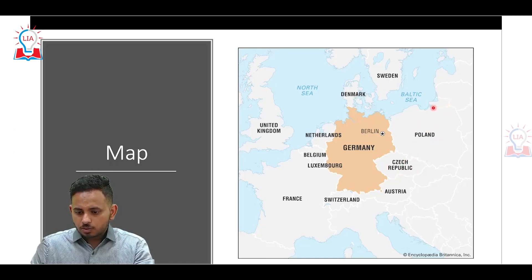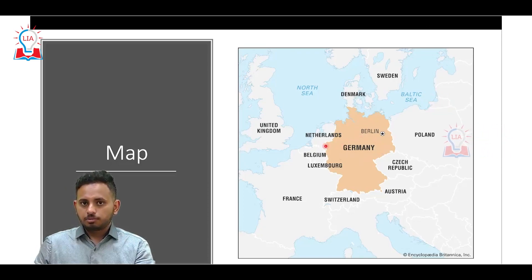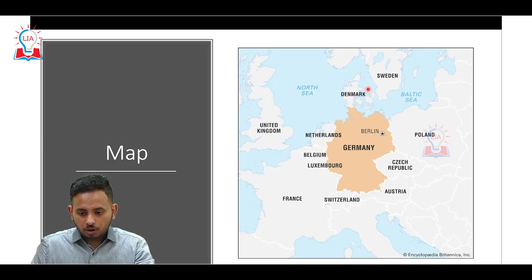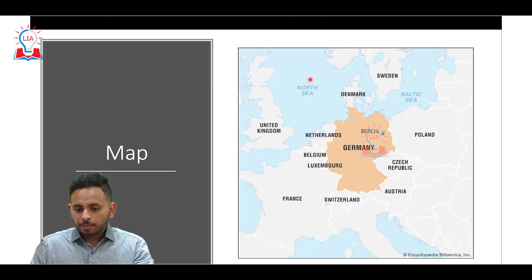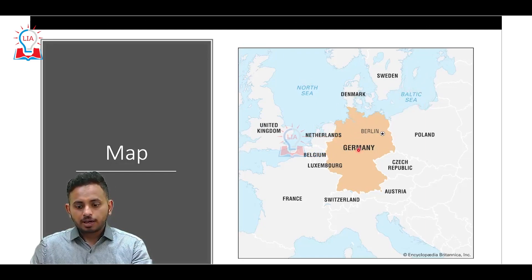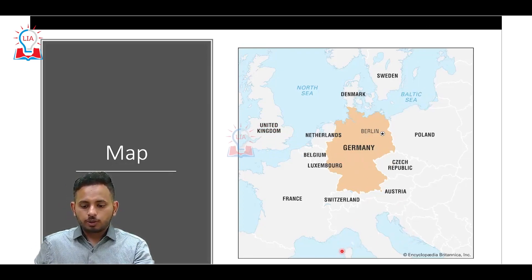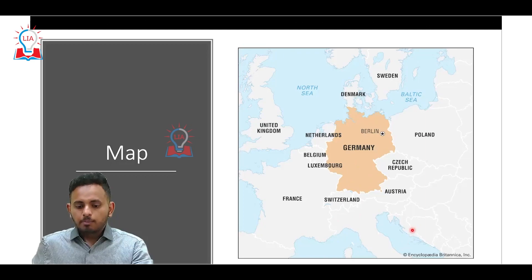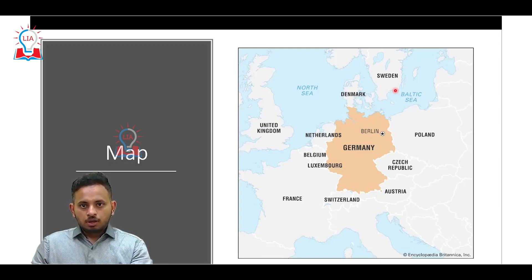There is also a small patch bordering Russia, which means Russia does not share a direct land border with Germany proper. Denmark also shares a small land boundary with Germany to the north. To the north-western part we have the North Sea, and to the north-eastern part we have the Baltic Sea. Germany does not share any border with the Mediterranean Sea.